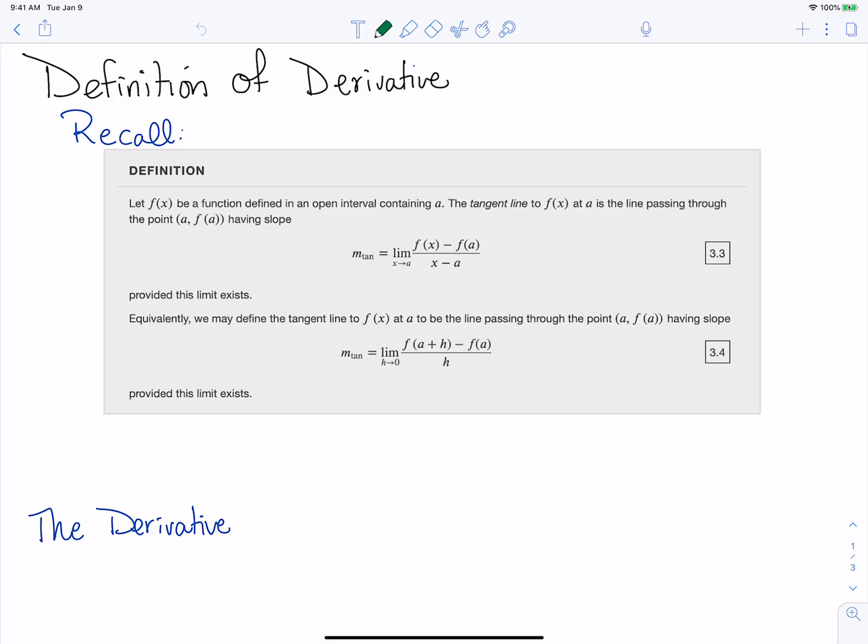Now we're going to talk about the definition of the derivative. We're going to pick up basically where we left off in the tangent line video, looking at this definition of the slope of our tangent line.